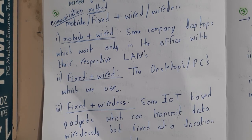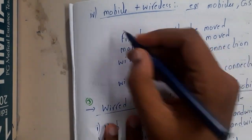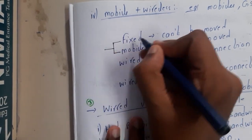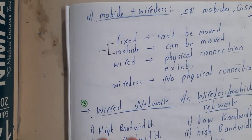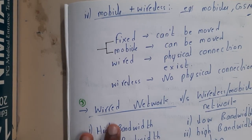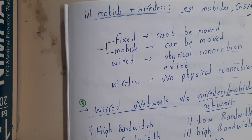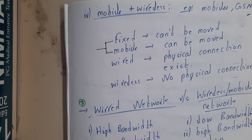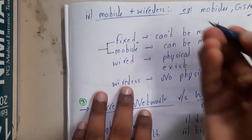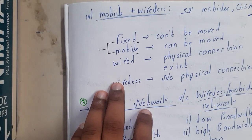A device can be in a fixed position or a mobile position. Fixed means it cannot move from one place to another while in use — the best example is your computer, which needs a direct connection to the power supply. Mobile, of course — your mobile phone is the best example.